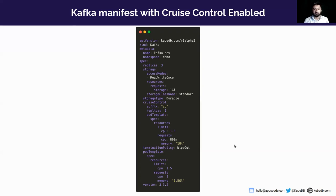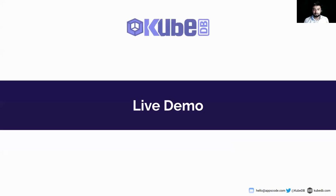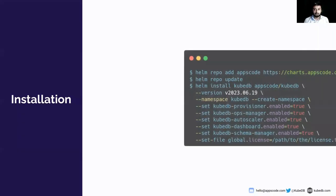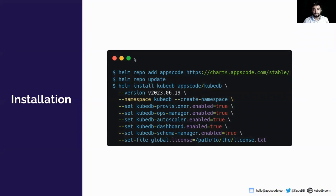Now let's jump into the demo. First, you need to install KubeDB using Helm charts. The last release was in June; our upcoming release is expected mid-August. You'll need to use that version tag if you want to install KubeDB-managed Kafka with Cruise Control. Now I'm going to jump into my terminal.